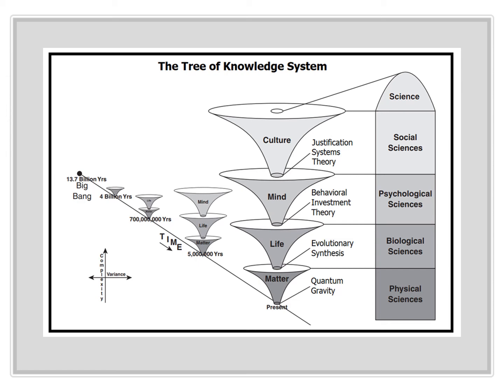The tree of knowledge is a new theory of cosmic evolution that stretches from the Big Bang to the present. As shown, it depicts the evolution of complexity in four phases or dimensions.